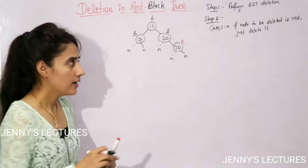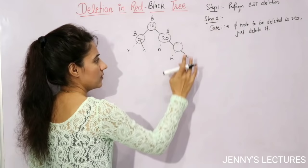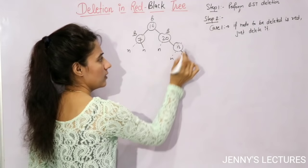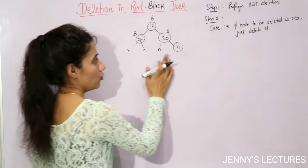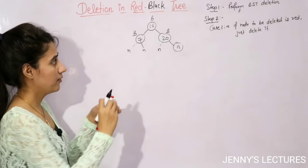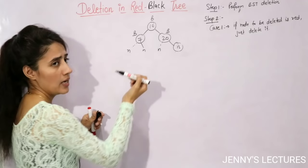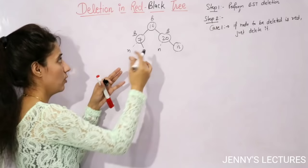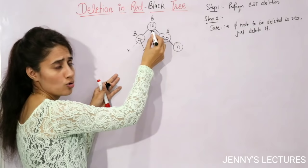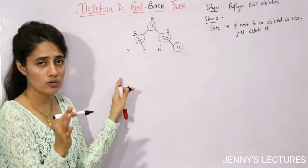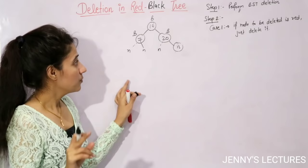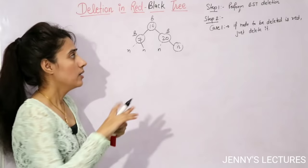After deleting the red node 30 and replacing with nil (black), verify the tree: root is black, no red-red conflicts, and every path still has the same number of black nodes. The tree is still a valid red-black tree. The count of black nodes per path depends on whether you count nil nodes or not, but the logic remains correct.